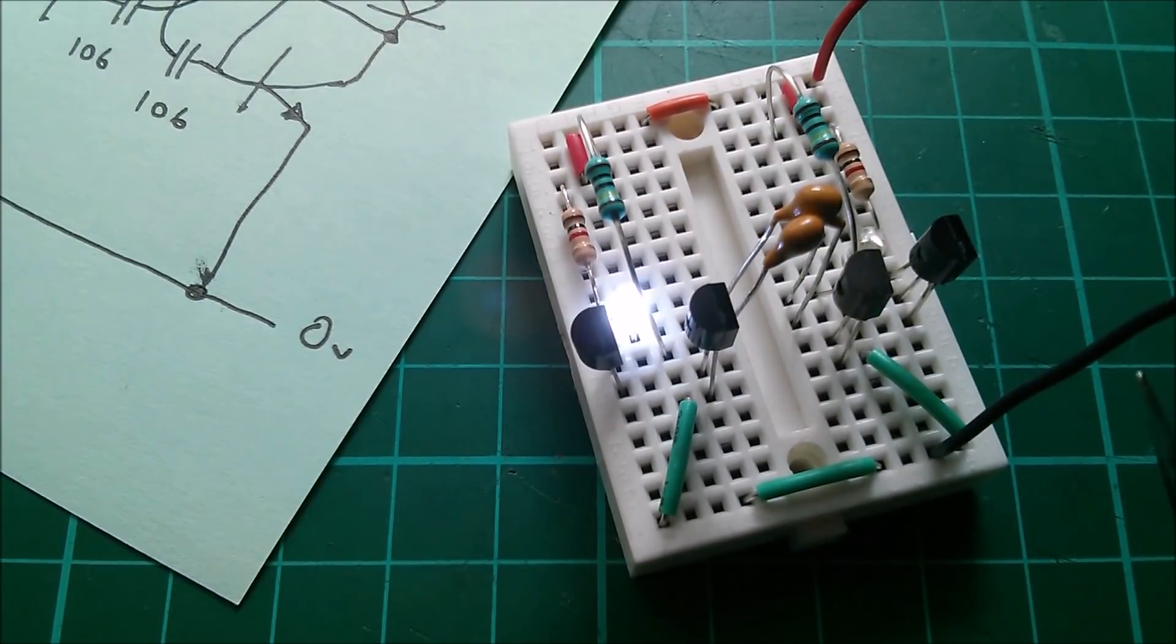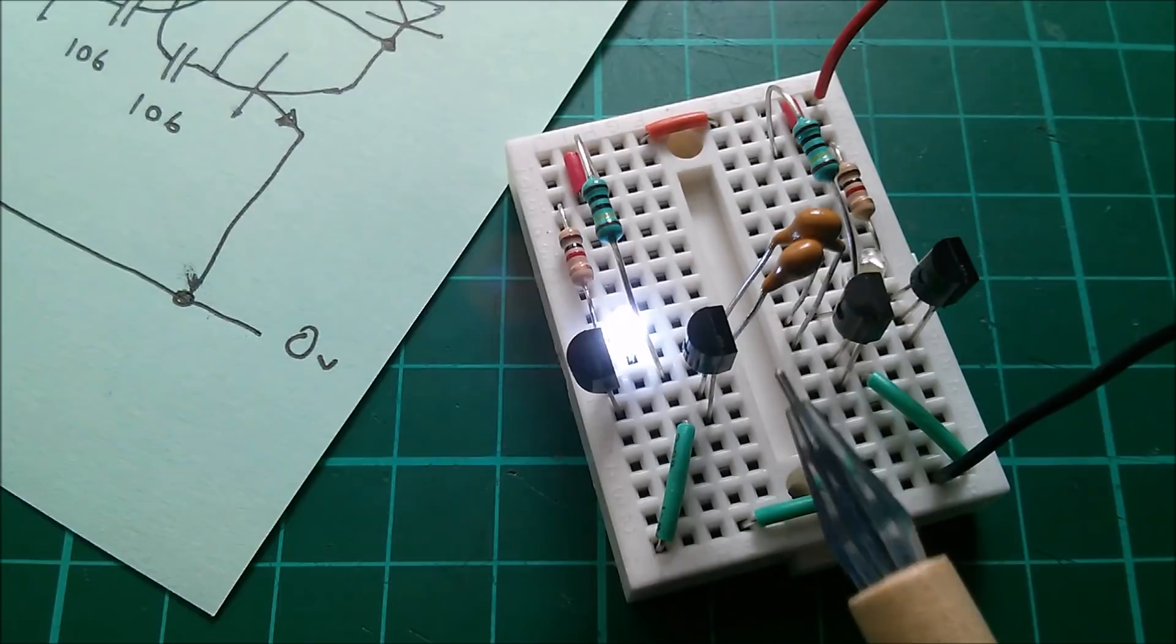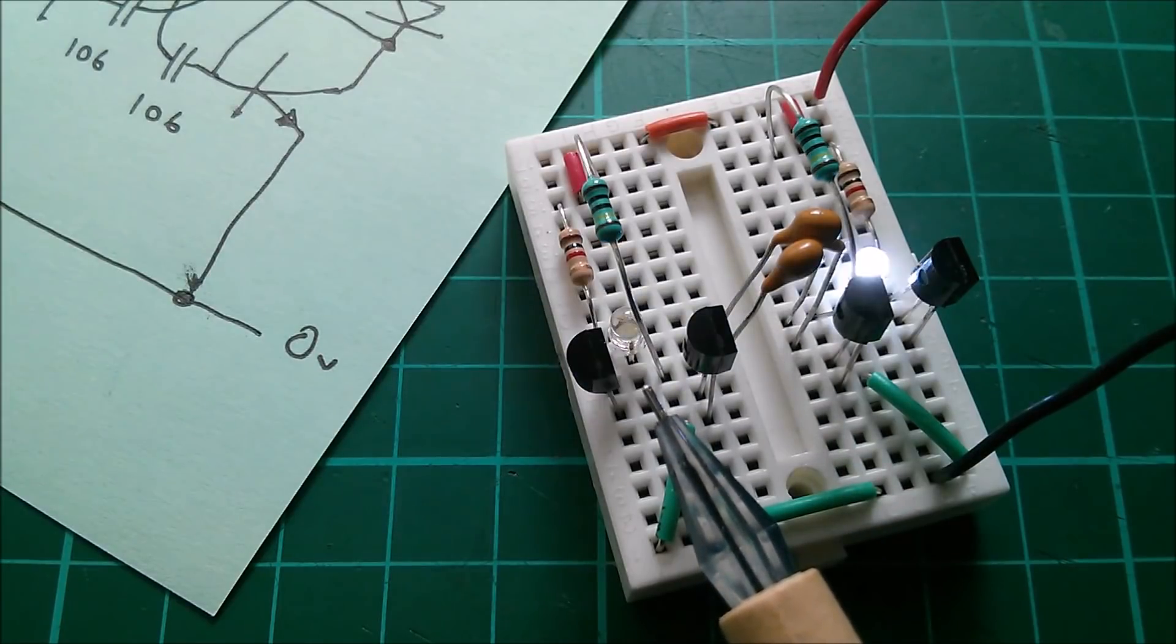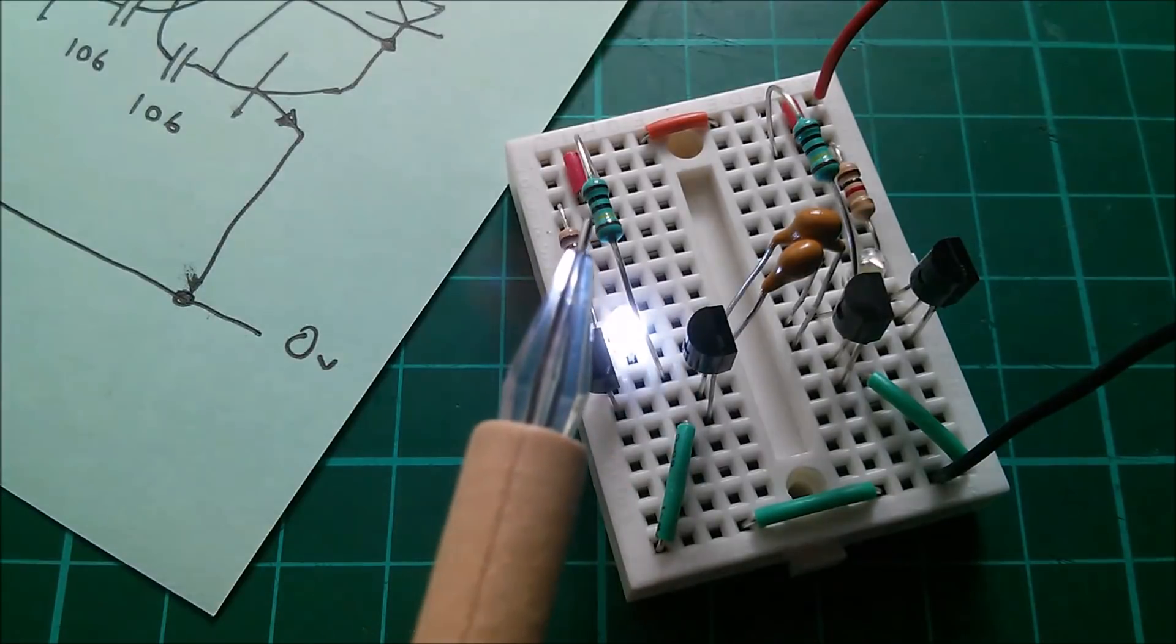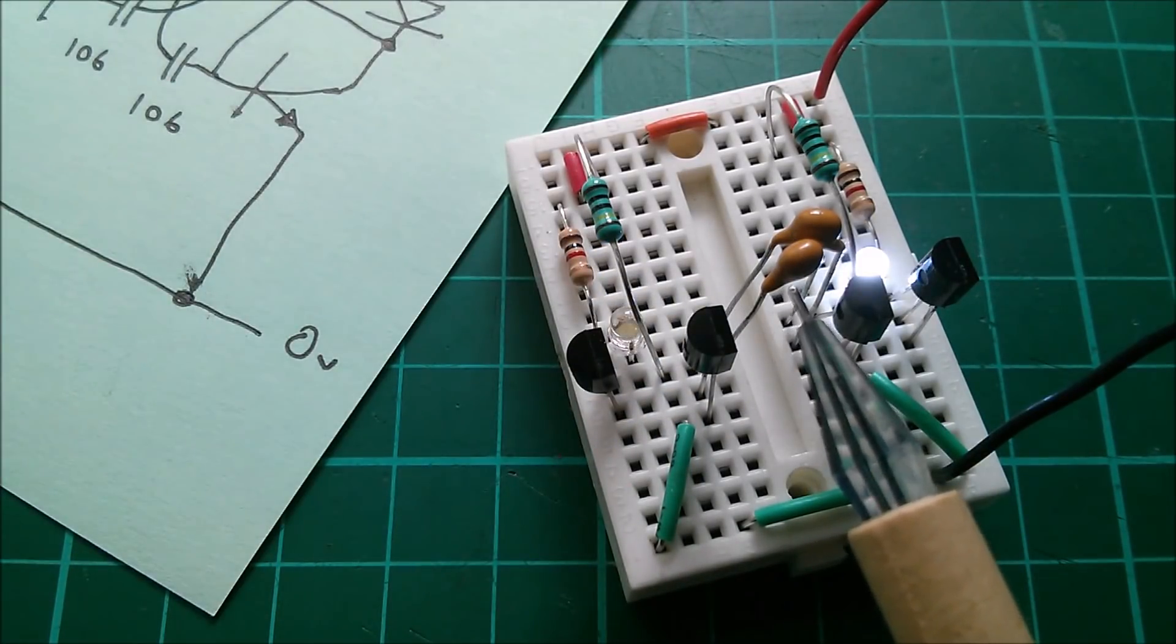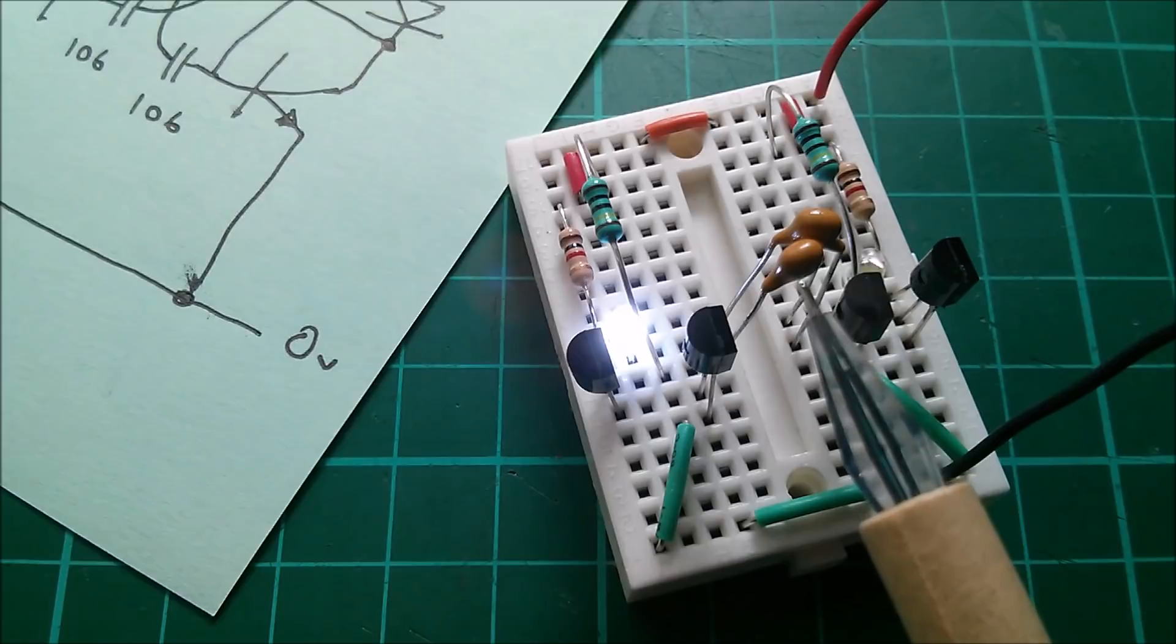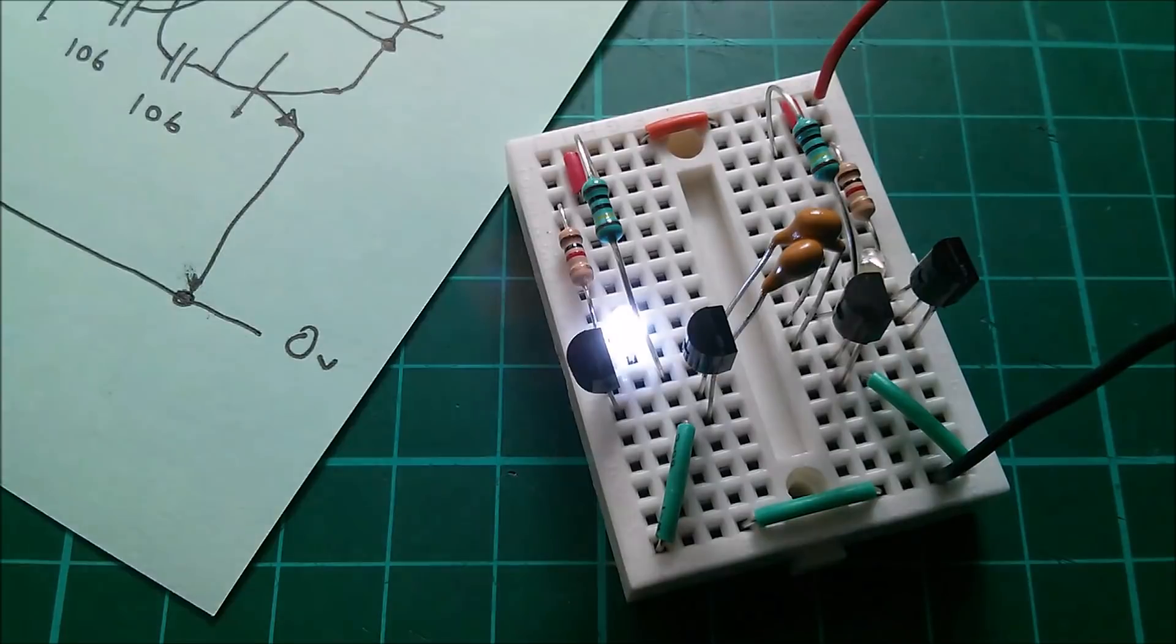And no, that seems to be a clean switch transition. So the Darlington having extra gain allows us to use the very high value one megaohm resistor in conjunction with these 10 microfarad capacitors to get a really slow flash but without that pulsing effect. So I call that a success.